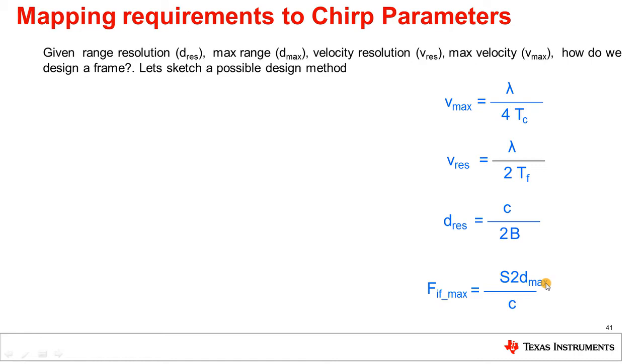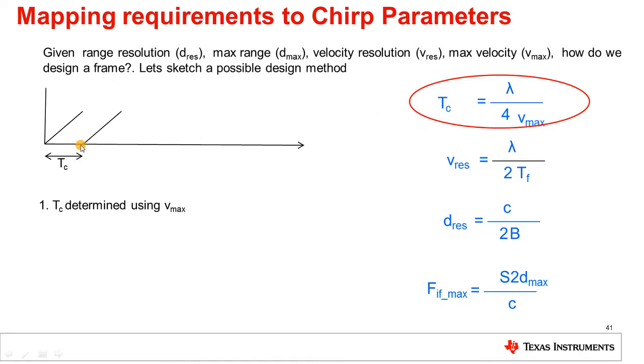So, I think we are now ready to try and design an FMCW signal that meets certain end user requirements. Let's say we are given specifications for a range resolution, a maximum range, a velocity resolution, and a maximum velocity. How do we use these specifications to design a frame? Let's sketch one possible design method. Let's start with the VMAX requirement. Note that VMAX depends only on TC. So, given VMAX, we can directly calculate the interchirp time TC. And we go ahead and put that in our frame.